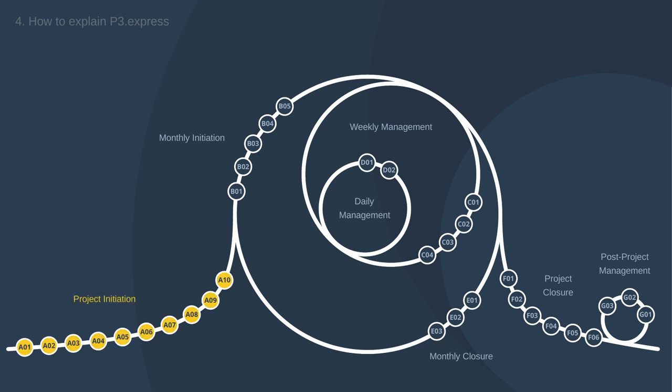Now let's go through the activities. Project initiation in P3 Express is a combination of the Starting Up a Project process and the Initiating a Project process from Prince2 — they are merged into one. Prince2 separating those two processes can be beneficial, but in reality people just don't do that, and it makes things more complicated. That's why they are combined into one activity group here. Activity groups include: project initiation, monthly initiation, monthly closure, and so on.